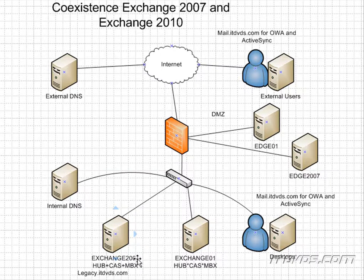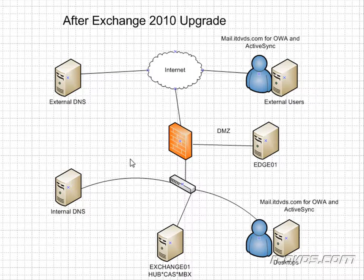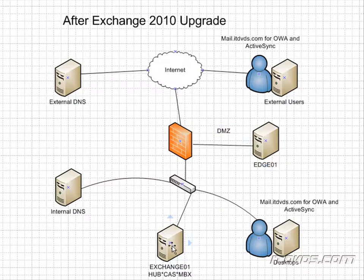We're not going to remove these until the very end when we've moved over all of our mailboxes to Exchange 2010. After the upgrade, it's going to look very similar to when we had just Exchange 2007, except everything is going to be Exchange 2010. That's kind of the easy part about upgrading from Exchange 2007 to Exchange 2010 as opposed to upgrading from Exchange 2003 — the roles stayed the same. So we're going to have our Edge Transport Server in our DMZ, and then our Exchange server with our hub transport, client access server, and mailbox roles in our network. We'll see you next time.